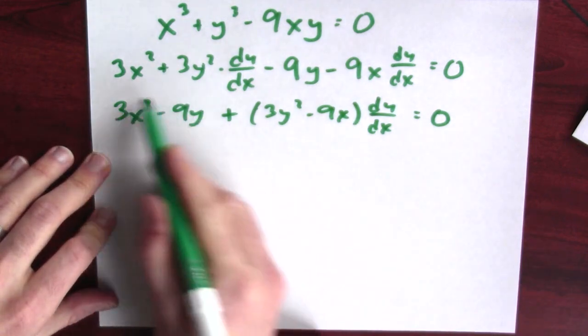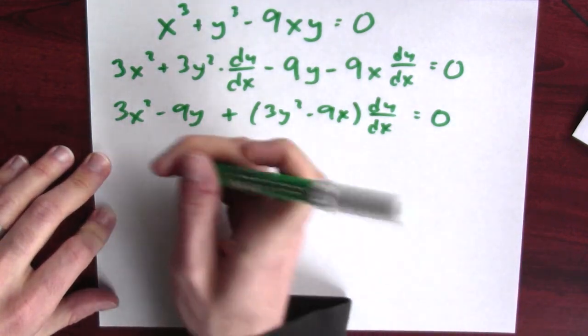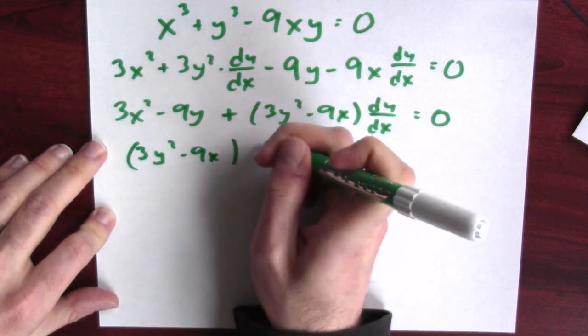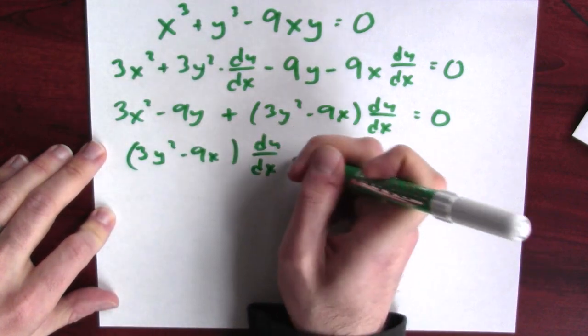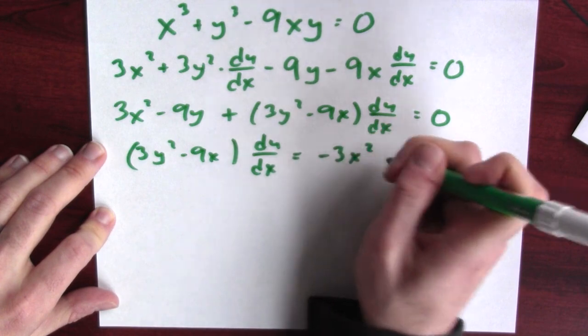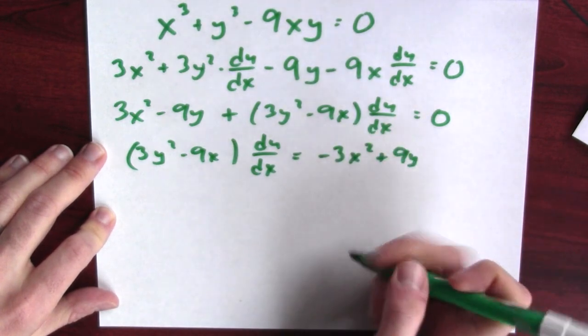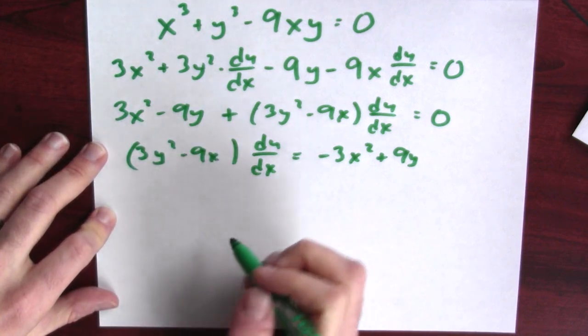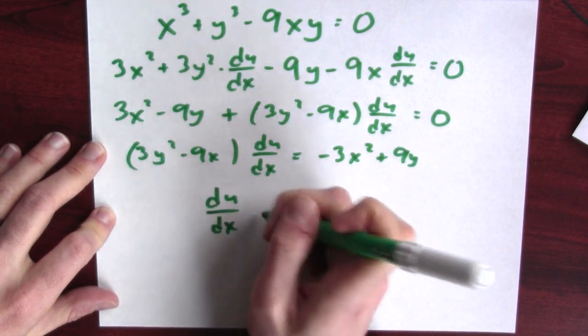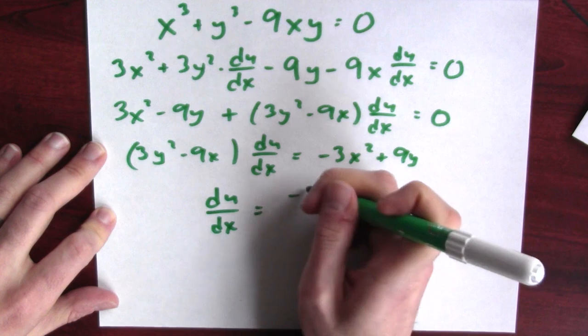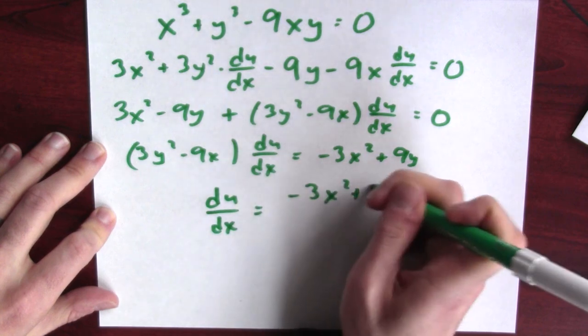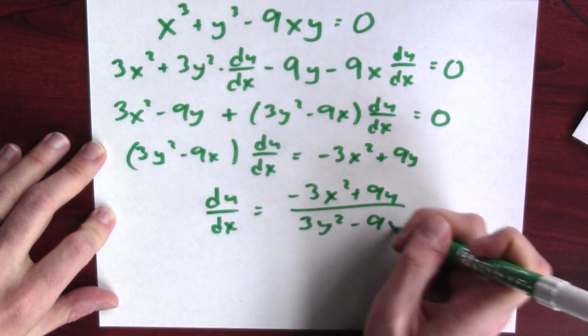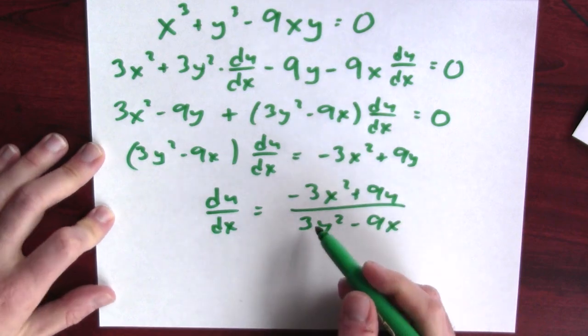Now I'm going to subtract this from both sides. So I'll have 3y squared minus 9x times dy dx equals minus 3x squared plus 9y. And I'm going to divide both sides by this. So I'll have dy dx equals minus 3x squared plus 9y over 3y squared minus 9x.